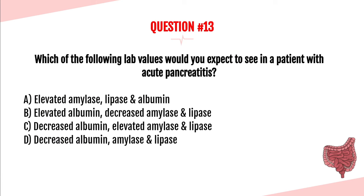Question number thirteen. Which lab values would you expect in a patient with acute pancreatitis? A. Elevated amylase, lipase, and albumin. B. Elevated albumin, decreased amylase and lipase. C. Decreased albumin, elevated amylase and lipase. Or D. Decreased albumin, amylase, and lipase. The answer is C — decreased albumin with elevated amylase and lipase. This has been covered previously in the discussion of acute pancreatitis lab findings.